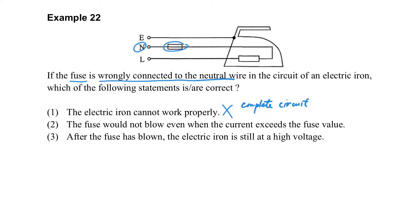How about statement 2? The fuse will still blow when the current exceeds a certain value, because the current can pass through the live wire and the neutral wire. How about the last part? It's true. Because when the fuse is blown, the electric iron is still at a high voltage. So it's not safe for us to touch it.